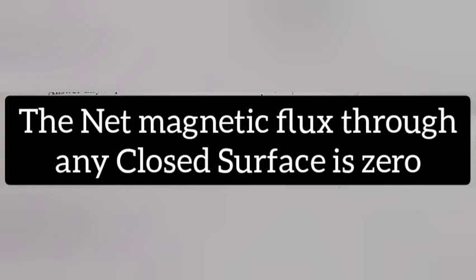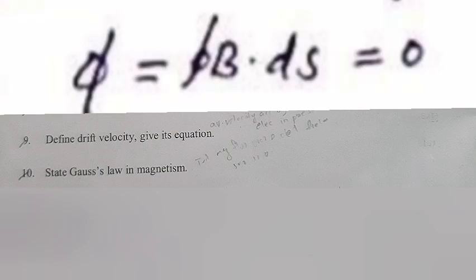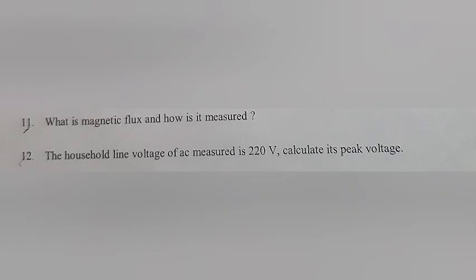Question 10: State Gauss's law in magnetism. Answer: The net magnetic flux through any closed surface is zero. Integral B dot ds equals zero.